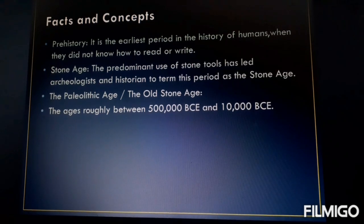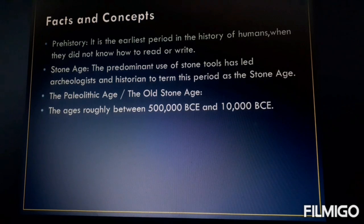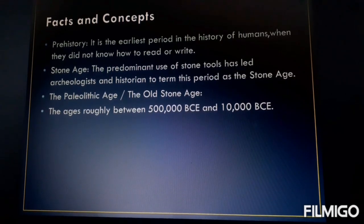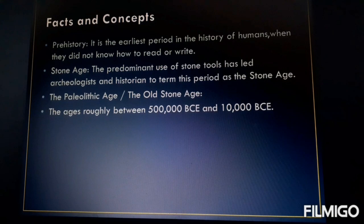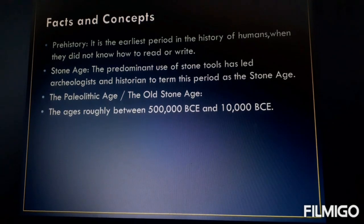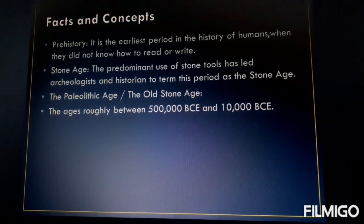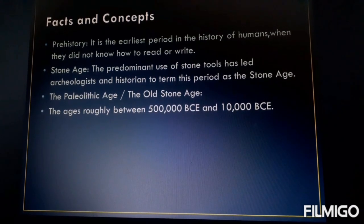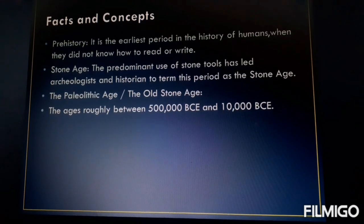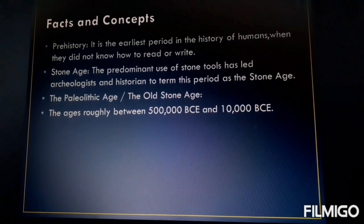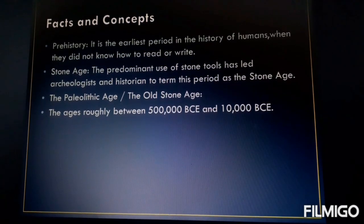Stone Age means the predominant use of stone tools had led archaeologists and historians to term this period as the Stone Age. The Paleolithic Age, or Old Stone Age, was roughly between 5,000 BCE and 10,000 BCE. You are all wondering why — reverse form. BCE means Before Christ Era. Here they usually count the timeline in reverse form — from 10,000 to 5,000 to 1,000 and so on.